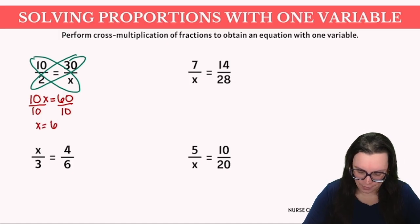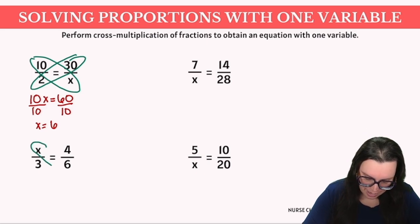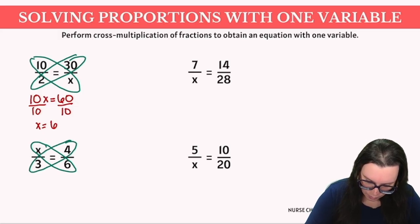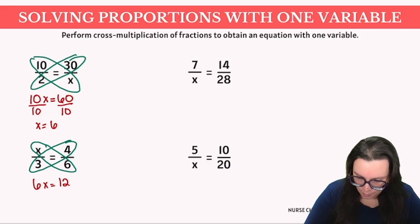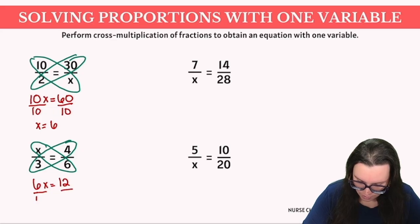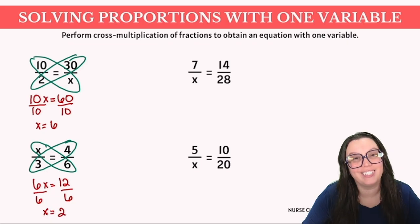Let's try another example. We have x over 3 equals 4 over 6. Again, we cross multiply our fractions, and that gives us 6x equals 12. We're going to divide each side by 6 to isolate x, and that gives us the correct answer of x equals 2.